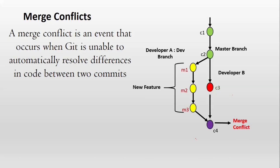Because Git is unable to understand or resolve differences in the code — that is C3 along with the development commits. So developer A has to connect with developer B and decide which are the valid changes to be kept, and accordingly they have to update the code to resolve the merge conflict.